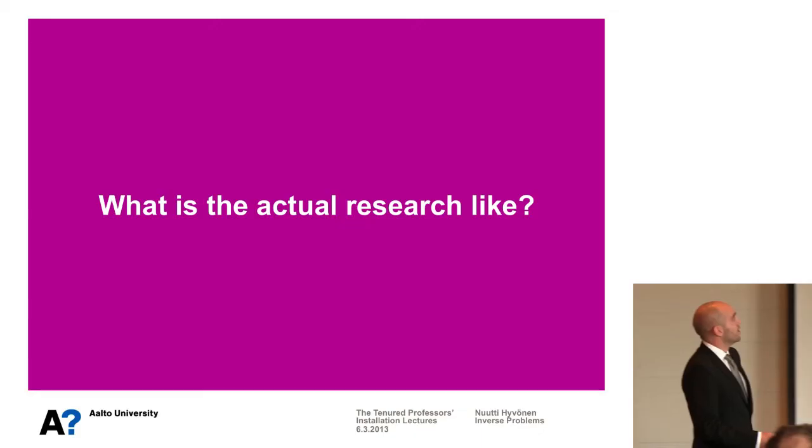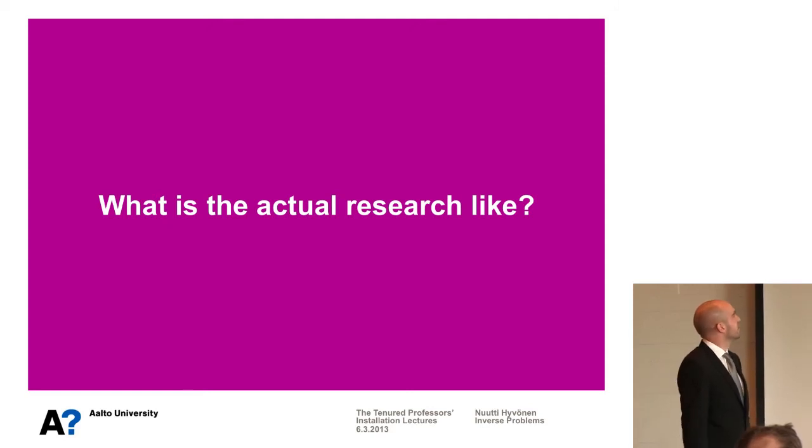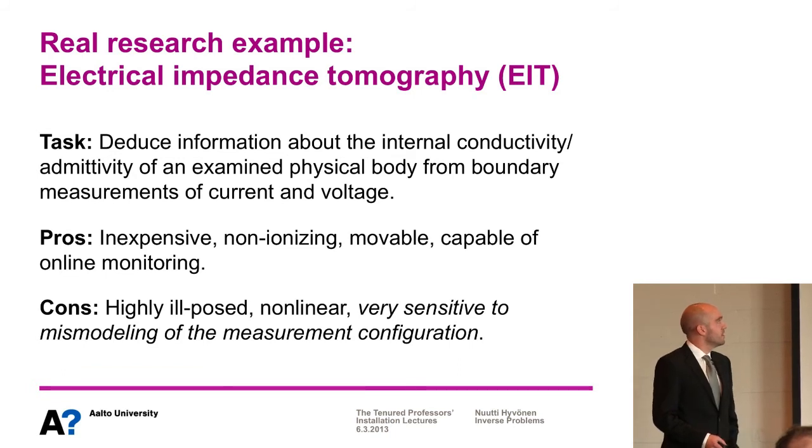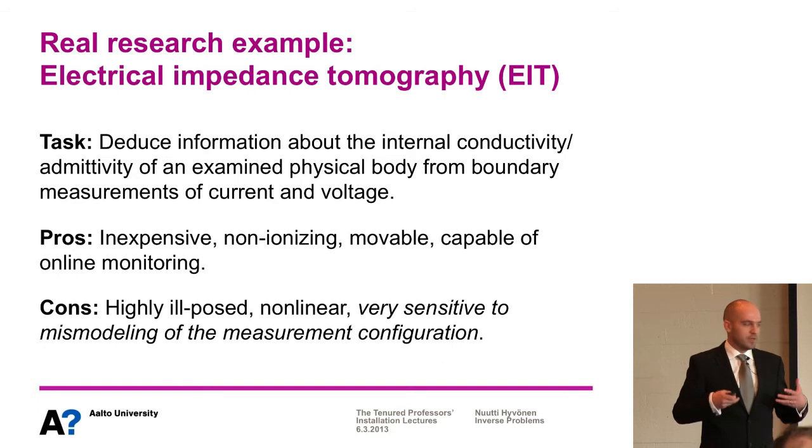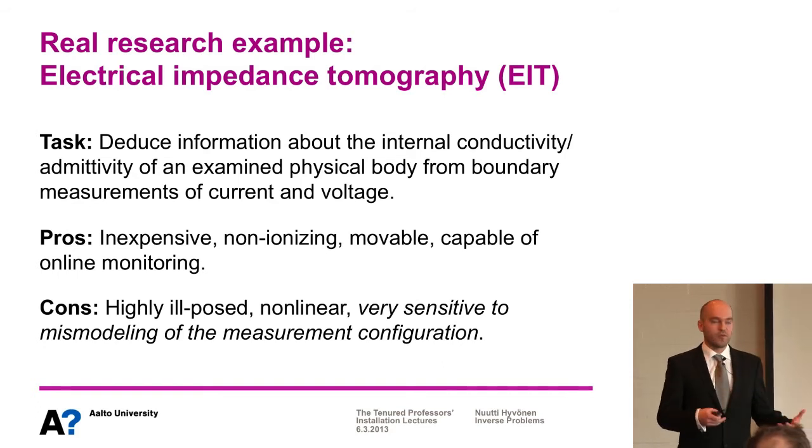To get into something really relevant to the research carried out in our inverse problems group at the Department of Mathematics and Systems Analysis: consider having some physical body — it could be a present, but it could also be the human torso. You place electrodes on the boundary of this object, drive currents between different electrodes, measure the corresponding voltages, and try to deduce information about the conductivity distribution inside the object from these boundary current and voltage measurements. This is called electrical impedance tomography.